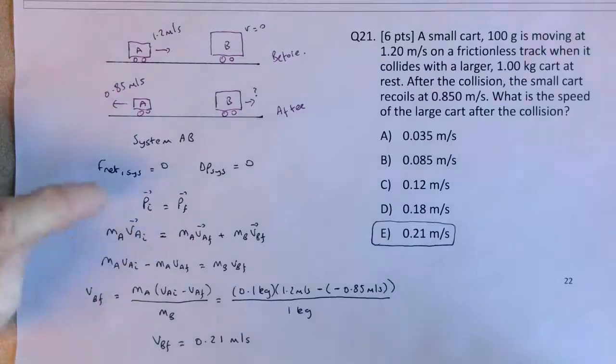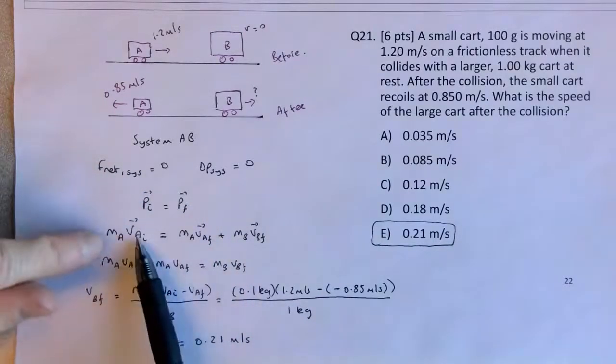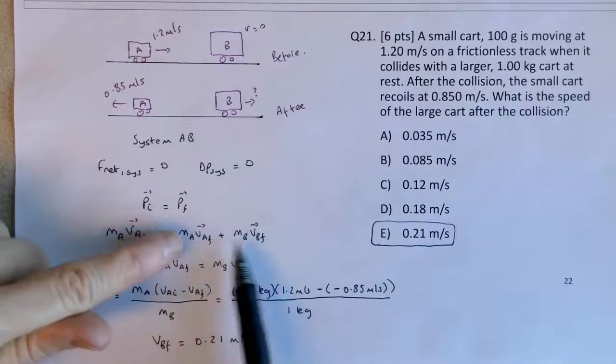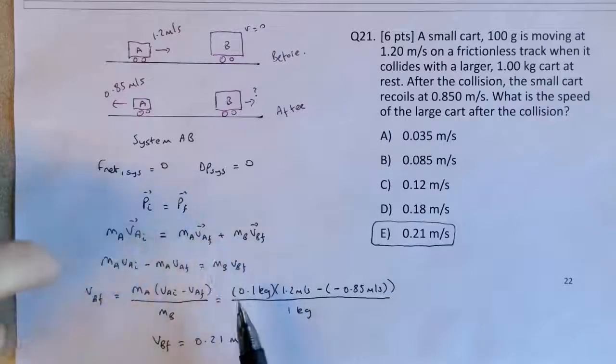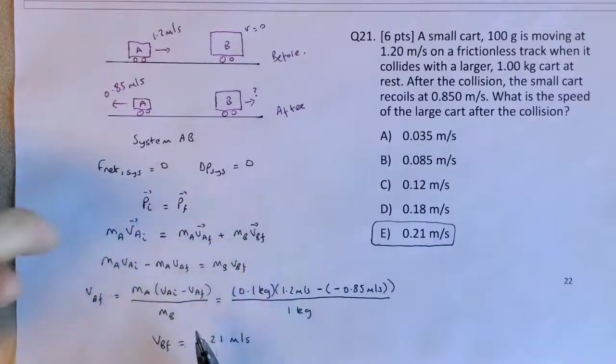You could have also said that delta P_A equals negative delta P_B, you should end up with the same equations and of course the same answer. But I just said that the initial momentum of the system equals the final momentum of the system. The initial momentum of the system is just A. The final momentum is the sum of the two momenta. These will have opposite directions because the velocities will be in different directions. If you work it out carefully, keep tracking your signs, you should end up with E.